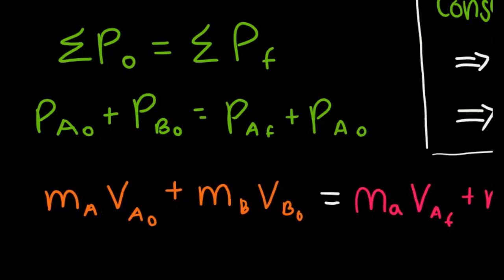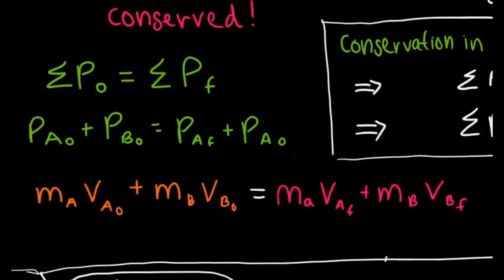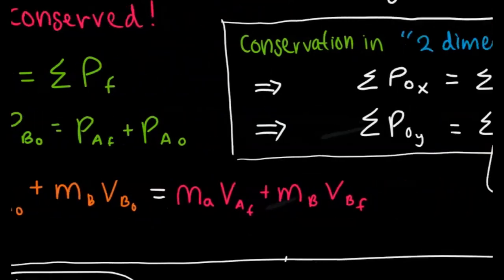You can see here that if we have two objects, let's say A and B, and they're involved in a collision, we can break down each of the objects into their individual momentums. For momentum of A initial, we can break it up into mass of A times velocity of A initial, plus for B we have mass of B times velocity of B initial. And this gives us our corresponding final values.